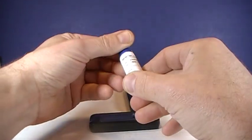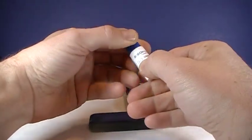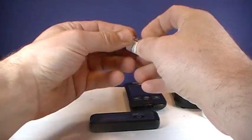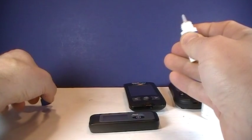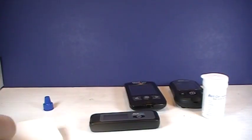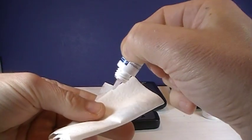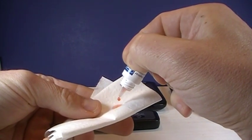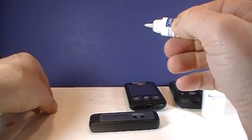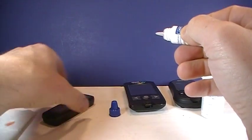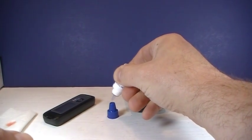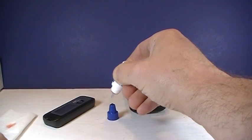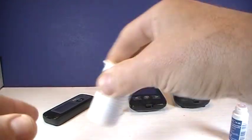So first of all this is the RelyOn control solution. Before using it you want to shake it well and remove the lid. The manufacturer recommends discarding the first couple drops on a clean tissue and then you want a clean surface to put the control solution on. In this case we're just going to use the lid. Okay so there's this drop there.